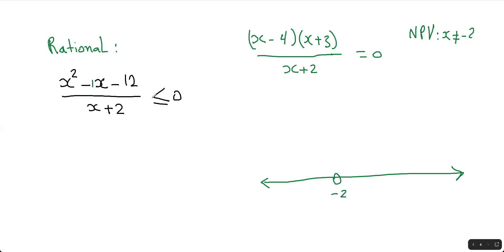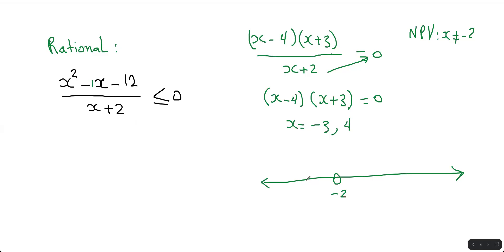When you're doing your number line, you have to include the non-permissible value. Even though it's less than or equal, you don't shade negative 2 because it's non-permissible. Cross-multiplying the x plus 2 gives x minus 4 times x plus 3 equals 0, so the zeros are x equals negative 3 and x equals 4. Negative 3 is right here and 4 is right here. There's an equal sign, so negative 3 and 4 must be shaded, but not the non-permissible value.